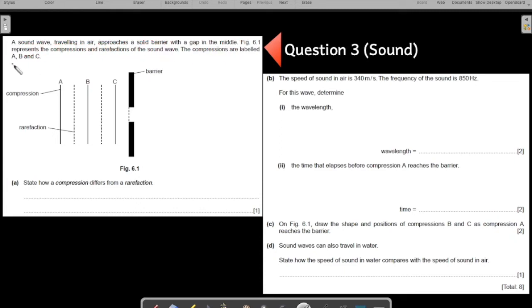The figure represents the compression and rarefaction of the sound waves. The compressions are labeled A, B, and C. So in between the compressions, what do you find? You find rarefaction. The dotted lines represent the location of rarefactions. You have a rarefraction here and another one here.